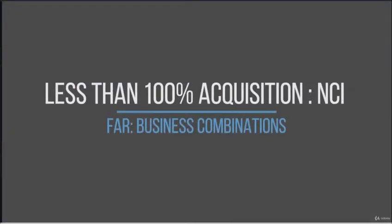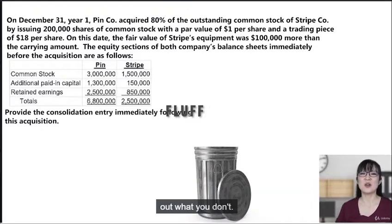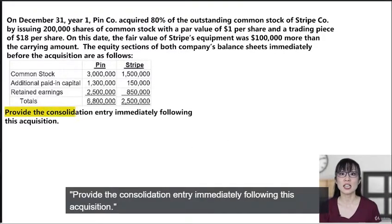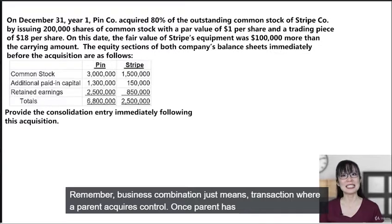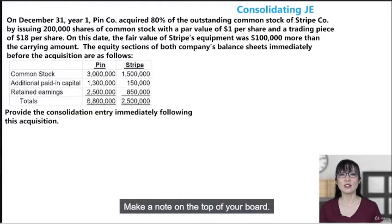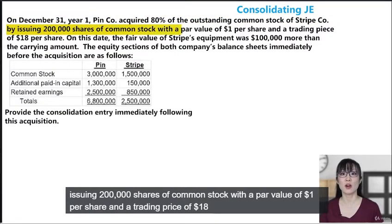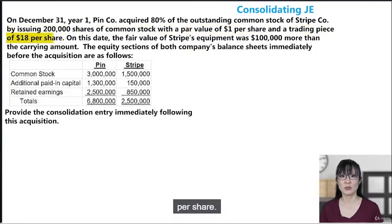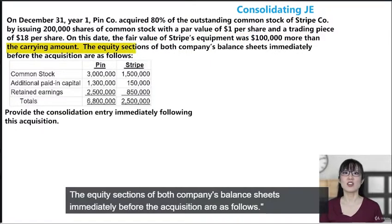Let's go to the board. Start with the question — as you read through the prompt, keep what you need and throw out what you don't. The question reads: provide the consolidation entry immediately following this acquisition. On December 31st, Year 1, Pin acquired 80% of the outstanding common stock of Stripe by issuing 200,000 shares of common stock with a par value of $1 and a trading price of $18. On this date, the fair value of Stripe's equipment was $100,000 more than the carrying amount.